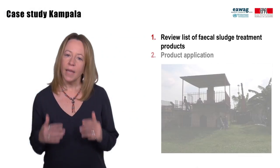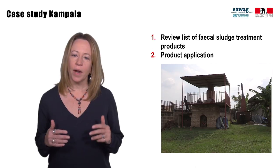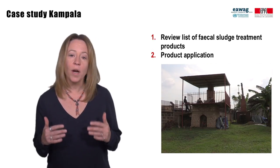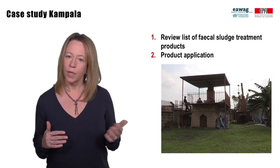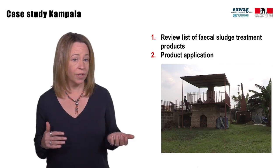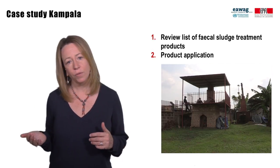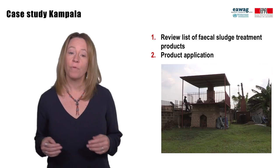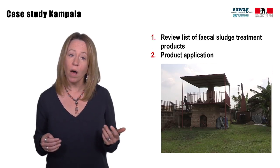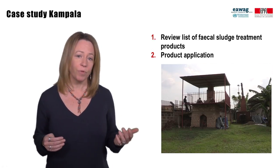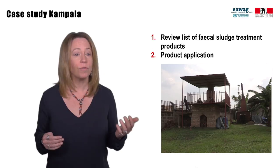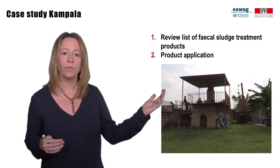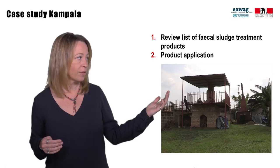The second step is defining the product application. Ask yourself: where can these products be used? In which industry, or is it used on a household level? Then list each application. For example, in Kampala, the product solid fuel is used for cooking in households and is also used to feed kilns in the brick factories.